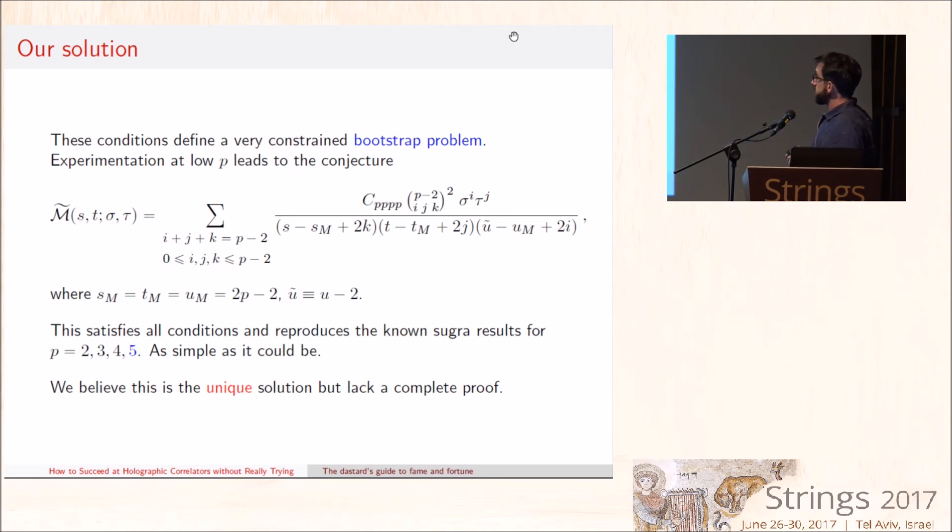And this is the solution. It's as simple as it could be. I told you that σ and τ just captured the group theory dependence, so it's a polynomial in σ and τ, and for each monomial there's a single extraordinarily simple function of S, T, and U. This should be contrasted with the hundreds of sums of functions that you find in position space. And from this one can extract, for example, anomalous dimensions of double trace operators as was done in the paper today on the archive.